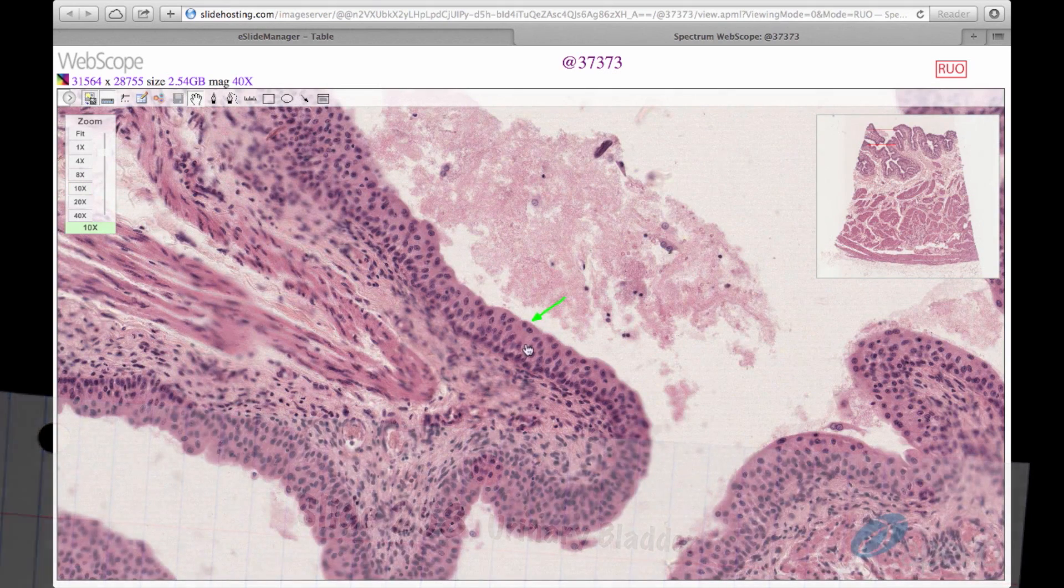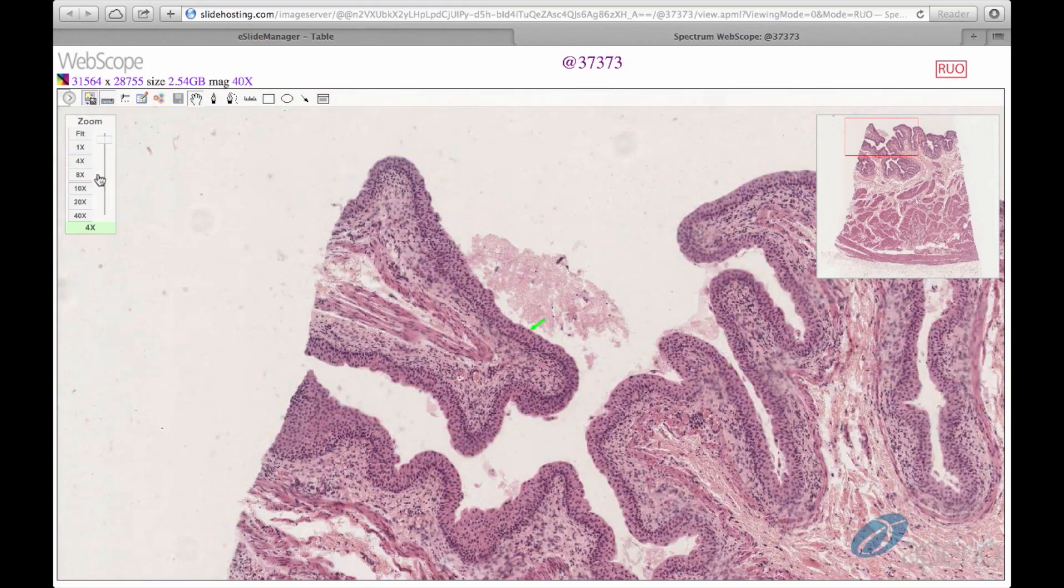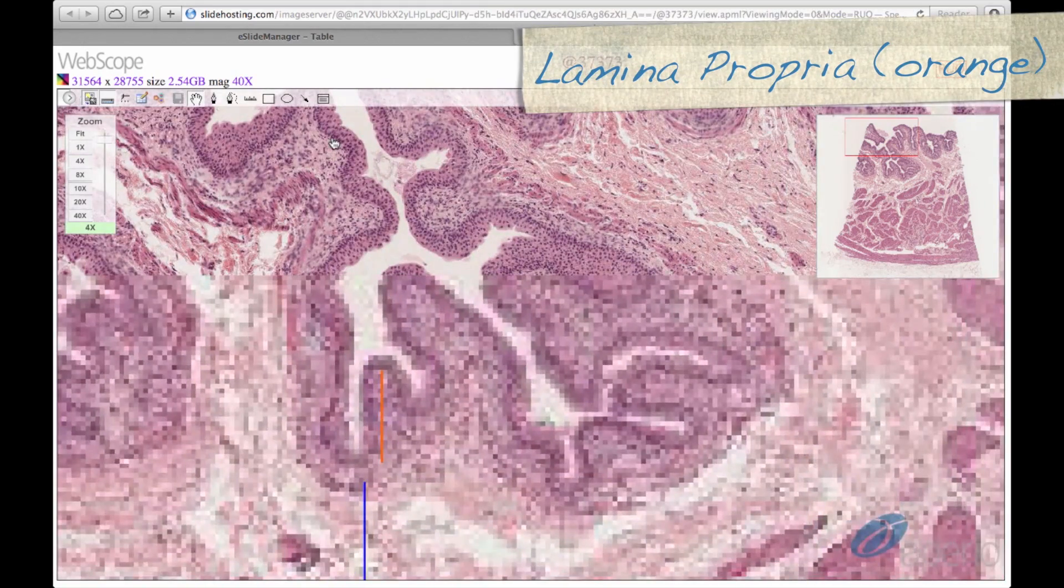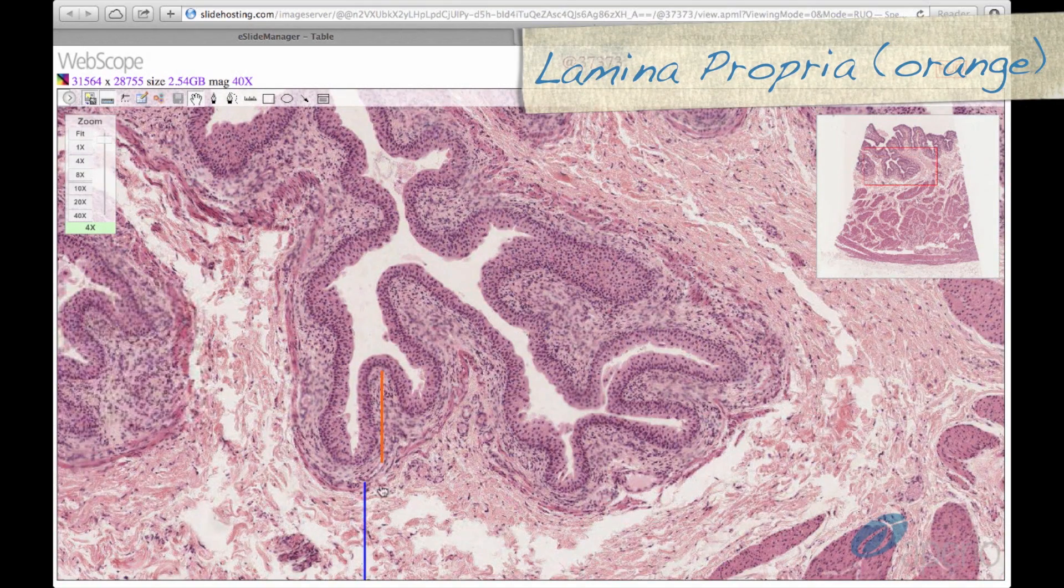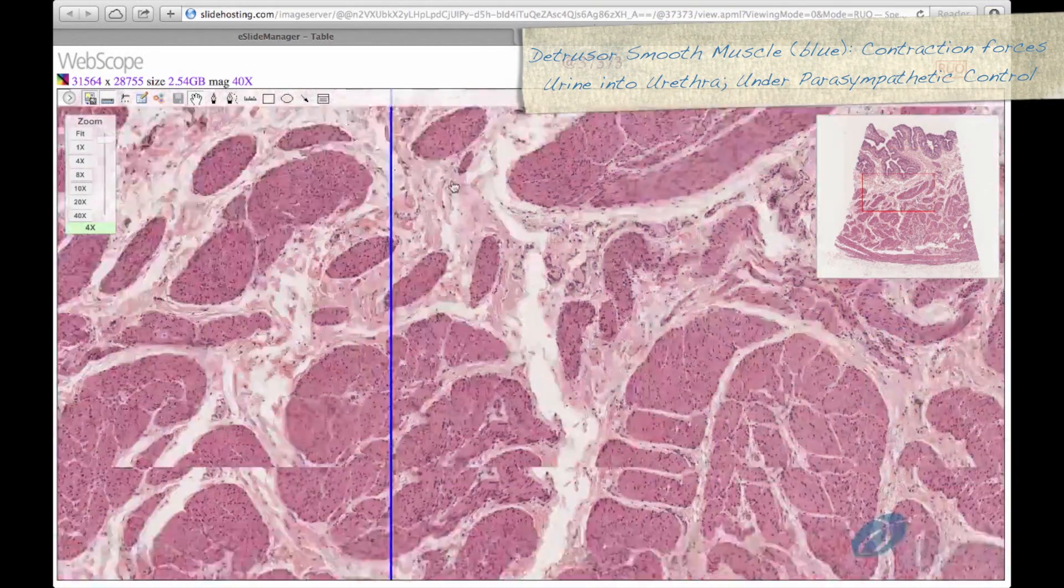Here we can see the urothelium, or transitional epithelium, at the green arrow. The lamina propria is spanned here by the orange line, and the smooth muscle layer is spanned by the blue line.